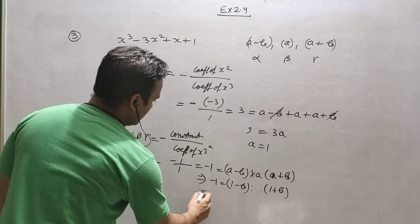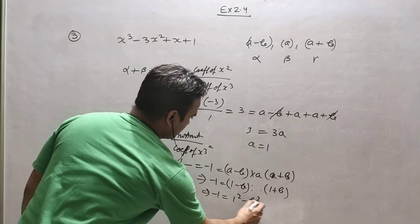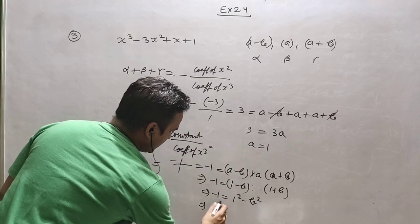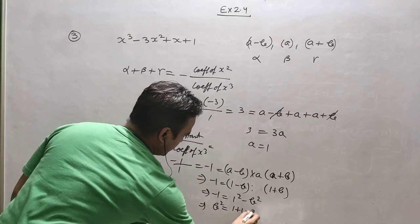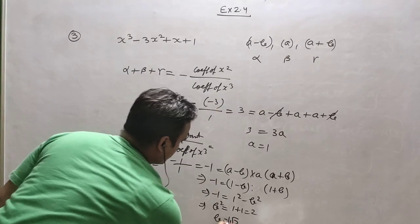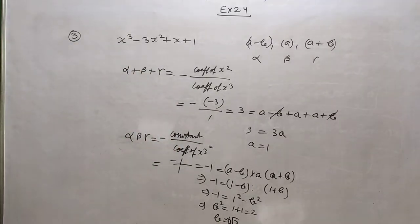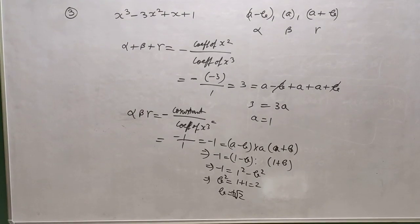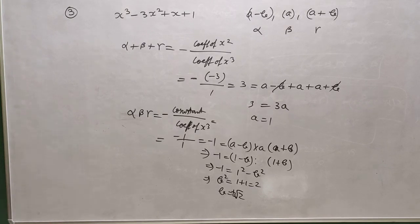So minus 1 equals 1 minus b squared. Shifting: b squared equals 1 plus 1 equals 2, so b equals plus minus root 2. It means a is 1 and b is plus minus root 2. This is a very important sum — sometimes it is asked in competitions.